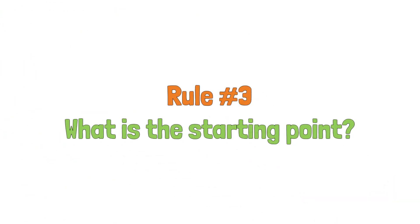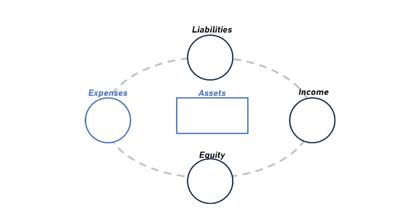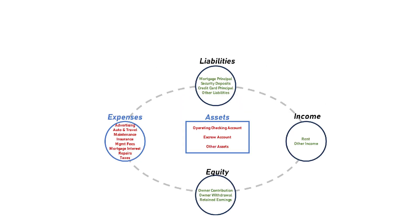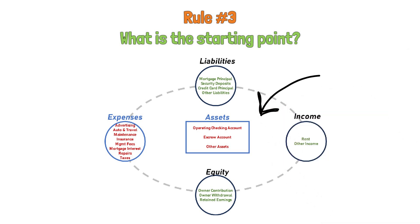Now that you know each transaction is a flow with a starting point and an ending point, your next job — which is rule number three — is to determine the starting point of the transaction. And to do this properly, you have to remember rule number one: is this transaction causing value to flow from outside into your business, causing value to flow within your business, or causing value to flow from your business to the outside world? If the transaction is of the first type — that causes value to flow from the outside world into your business — then it must first be checked in an account in one of the four main checkpoints, which are income, liability, expenses, or equity. So your starting point is going to be an account in one of these four main categories.